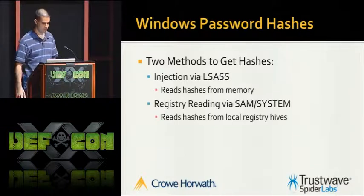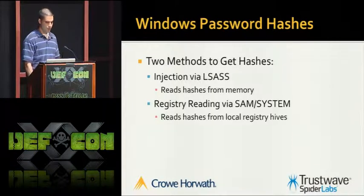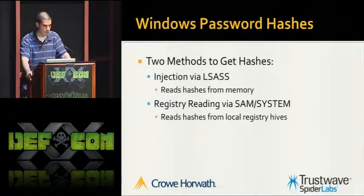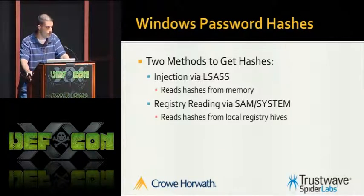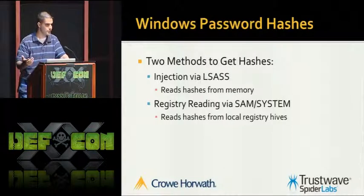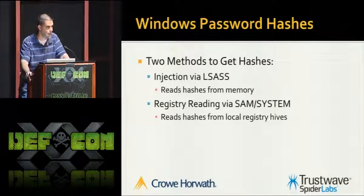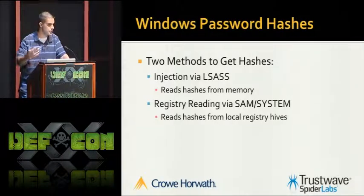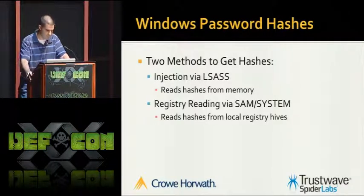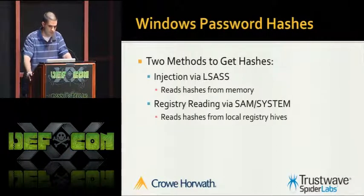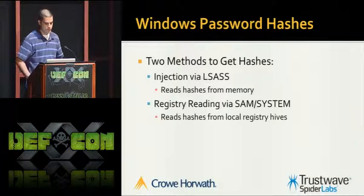There are two main methods to extract these hashes. The first is to inject into LSASS - the Local Security Authority Subsystem - a process running in memory with highly elevated privileges including debug rights. You upload a DLL into that address space, inherit those permissions, and directly access the hashes. Tools like PWDump 6, FGDump 2.01, and some other PWDump versions do this.